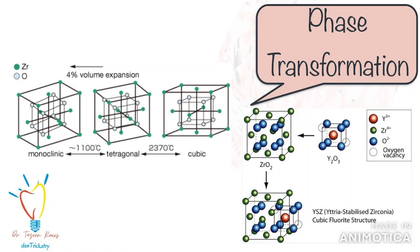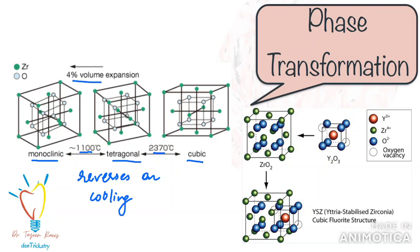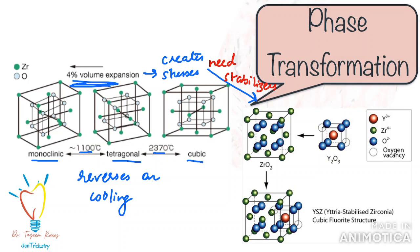Zirconia is found in many phases: monoclinic, tetragonal, and cubic. Up to 1170°C, zirconia is monoclinic; then it converts to tetragonal until 2370°C; and it is cubic until the melting point of 2680°C. These phase transformations are reversed on cooling and accompanied by volume expansions. The volume expansion from cubic to tetragonal to monoclinic transformation induces large stresses that cause zirconia to crack upon cooling. To prevent this, additives such as calcium oxide, magnesium oxide, cerium oxide, and yttrium oxide are utilized.